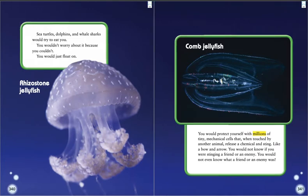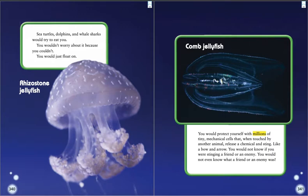Sea turtles, dolphins, and whale sharks would try to eat you. You wouldn't worry about it because you couldn't — you would just float on. Here we have a rhizostome jellyfish. You would protect yourself with millions of tiny mechanical cells that, when touched by another animal, release a chemical and sting like a bow and arrow. You would not know if you were stinging a friend or an enemy. You would not even know what a friend or an enemy was. This is a picture of a comb jellyfish.